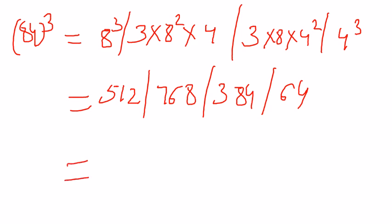So the last step: 4, 6 carried, 390. So I'll add 0 and 39 carried. 768 plus 39 gives me 807. So I'll add 7 and 80 carried. 80 plus 512 gives me 592. So this is the answer. This is the cube of the number 84.